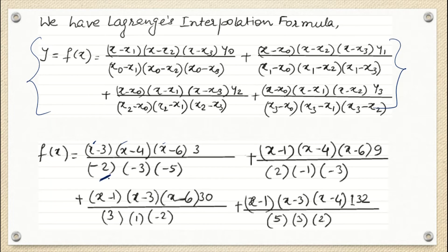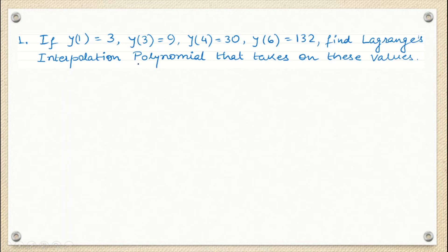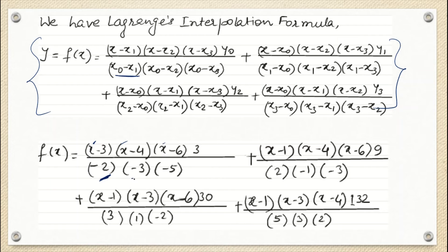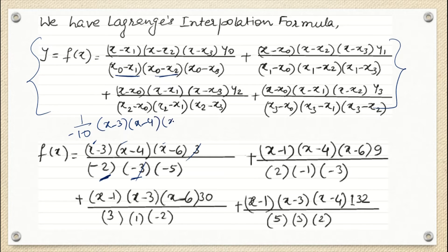For example, x0 minus x1 gives 1 minus 3 which is minus 2. Similarly x0 minus x2 and x0 minus x3 are computed. Substituting all values, the denominator of the first term becomes minus 10, and the numerator is x minus 3, x minus 4, x minus 6.